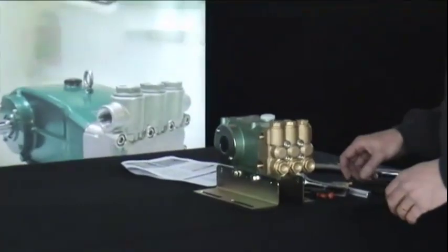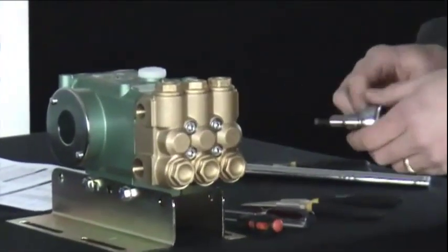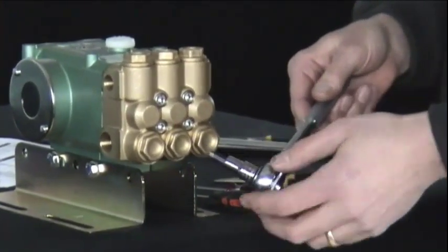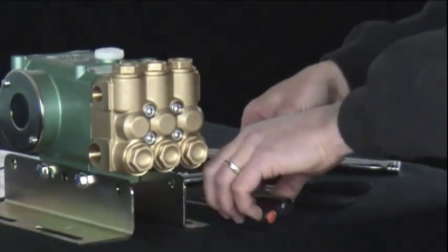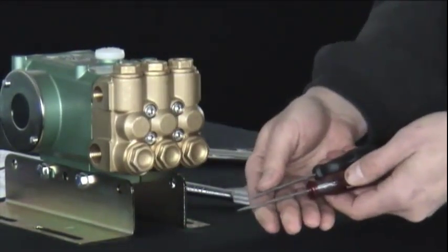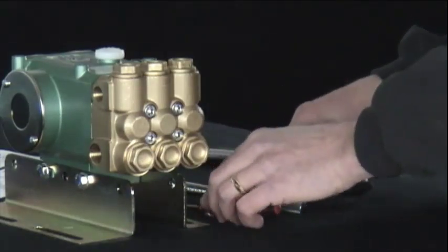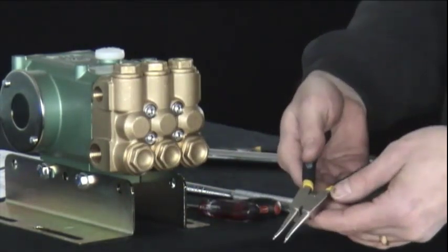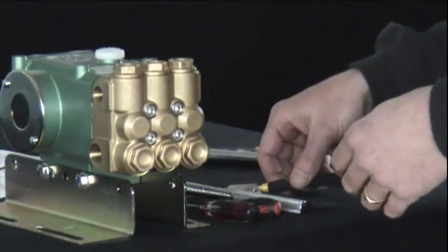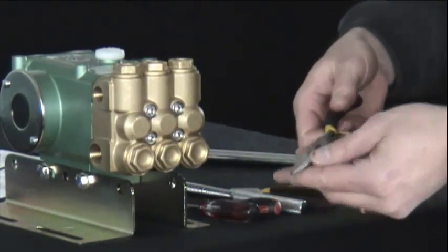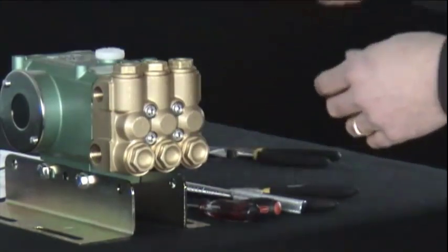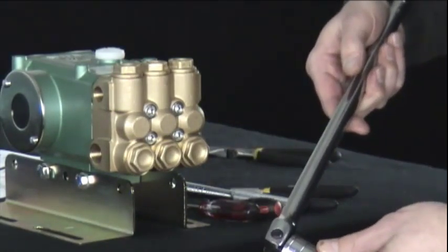Common tools used for seal service include a 3-H drive ratchet with a 6mm Allen socket, two small screwdrivers, and a reversing plier. For valve service, a needle-nose plier and a 24mm socket are required.